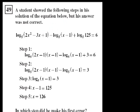At the bottom they say, in which step did he make his first error? So let's see, log base 5 of 2x squared minus 3x plus 1, minus log base 5 of x minus 1, plus log base 5 of 125 equals 6. Fair enough.